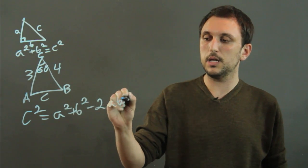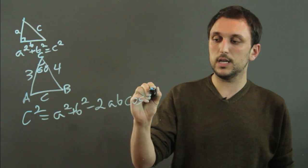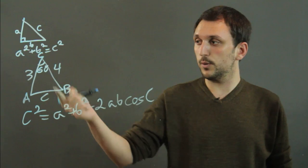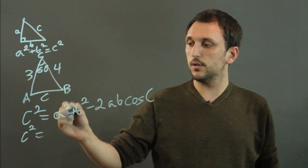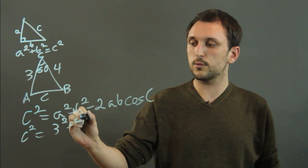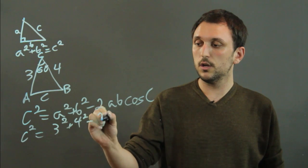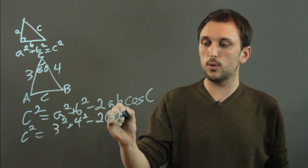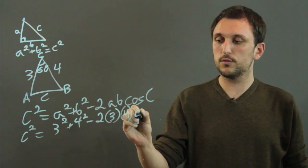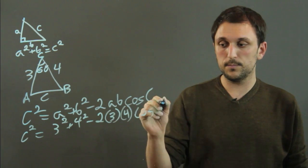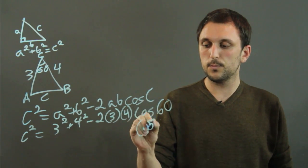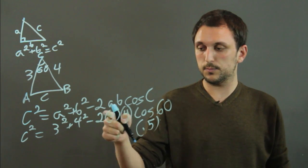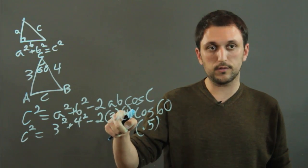So we say c squared equals 3 squared plus 4 squared minus 2 times 3 times 4 times cos 60 which is going to be 0.5 and we can multiply all this together and 2 times 3 is 6 times 4 is 24 times 0.5 is 12.